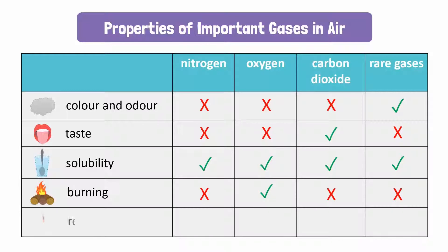Nitrogen and carbon dioxide are not very reactive components of air. Oxygen, on the other hand, is very reactive. Unlike oxygen, the rare gases are inactive.